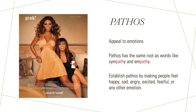The second method of persuasion is pathos, which is an appeal to emotions. Pathos has the same root as words like sympathy and empathy. Sympathy is when you feel emotions for another person and their situation, and empathy is when you understand or even experience the emotions that another person is feeling. Pathos is all about emotions, and you establish pathos in your arguments by making people feel happy, sad, angry, excited, or any other emotion about the issue you're trying to persuade them about.